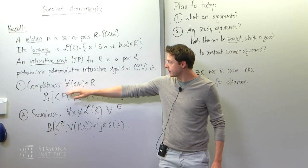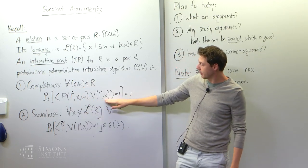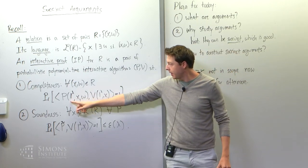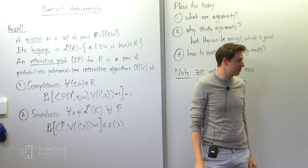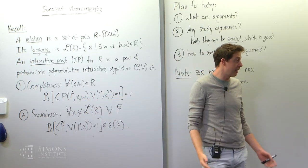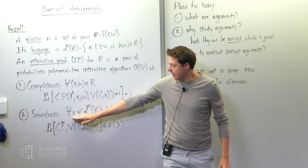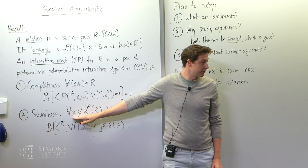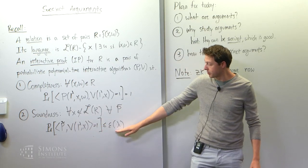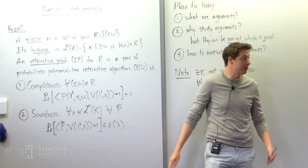The first property is completeness: for every pair in the relation, if you hand this pair to the prover and give the instance to the verifier, at the end of their interaction the verifier says 'I'm convinced' with probability one. I also added a security parameter. You can think of both the prover and the verifier as having a security parameter lambda that controls soundness. When the instance happens to not be in the language, no matter which prover shows up, the verifier will be convinced with probability at most some error that should go down very fast with the security parameter — something like 2 to the minus lambda.